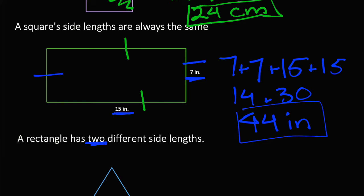It's important to always put the units, because if you just say 44, we don't know — it could be 44 meters, 44 miles — so always make sure to write that down.